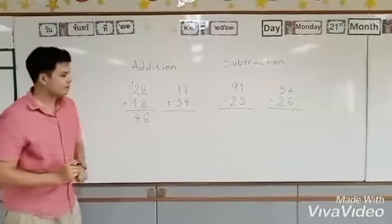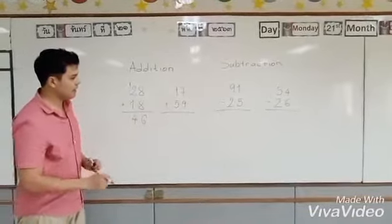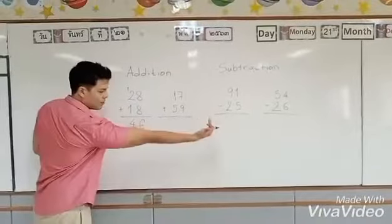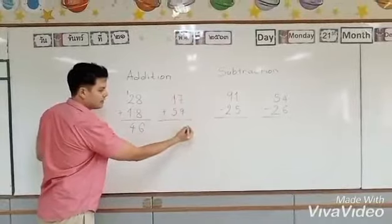Let's look at this example: 17 plus 59. Again, start from the right, go to the left. 7 plus 9 equals 16.